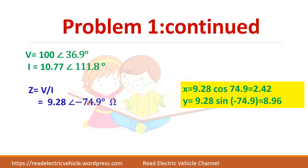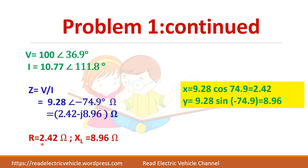Now let us convert this into rectangular form. The real part equals the magnitude times cos of the angle, and the imaginary part equals the magnitude times sin of the angle. From this you can find the values of R and Xc.